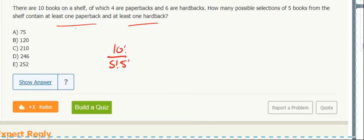Now total minus what they don't want. Now there's not just one scenario. If they said what's the probability of at least one hardback, I would do total minus no hardbacks or all paperbacks.